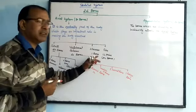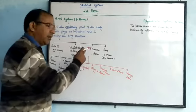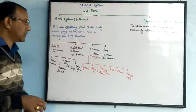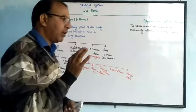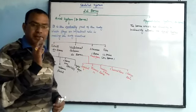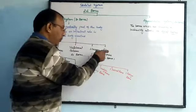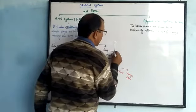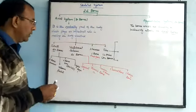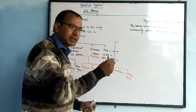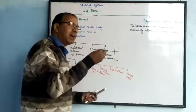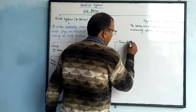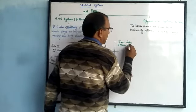The sternum, also known as the chest bone, is a single bone present on the ventral side near the heart. There are 12 pairs of ribs — though in every 20th person in the world there may be 13 pairs, which is an exceptional case. The first seven pairs of ribs are directly attached to the sternum, so they are known as true ribs, consisting of 14 bones.